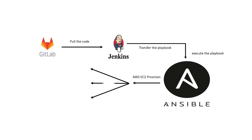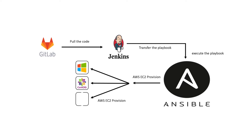In the final stage, Jenkins will execute the Ansible Controller, provisioning the CentOS EC2 Instance, Ubuntu EC2 Instance, and Windows 2016 EC2 Instance. Finally, all three EC2 Instances will be provisioned in AWS.